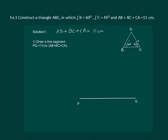We start with drawing a line segment PQ equal to 11 centimeters. At P, construct an angle of 60 degrees.